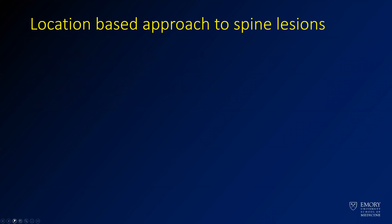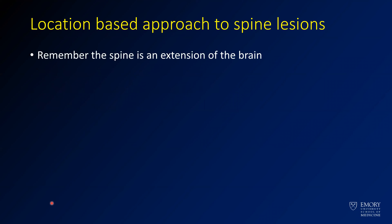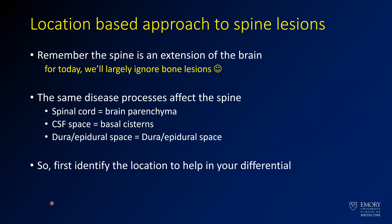When you have a location-based approach to spine tumors, the spinal cord is really an extension of the brain, and the CNS is all kind of contiguous. So the differentials you're thinking about are generally the same. Things that affect the spinal cord tend to be the same things that affect the brain parenchyma. The CSF tends to involve the same things as the leptomeninges and basal cisterns. If you can first find a location, you can make your differential based on that, which is extremely helpful.